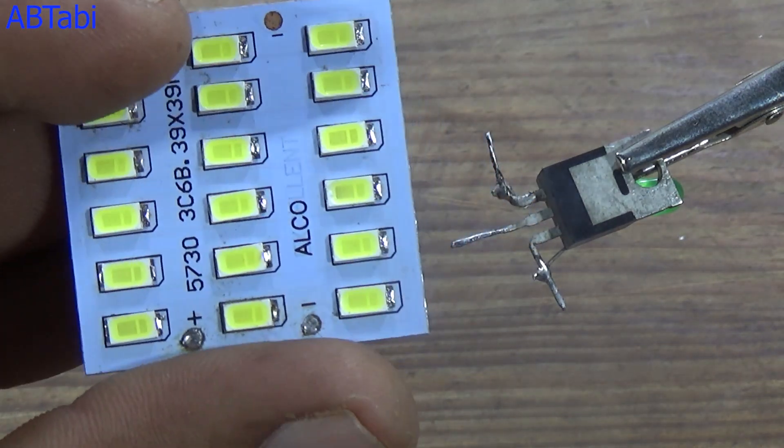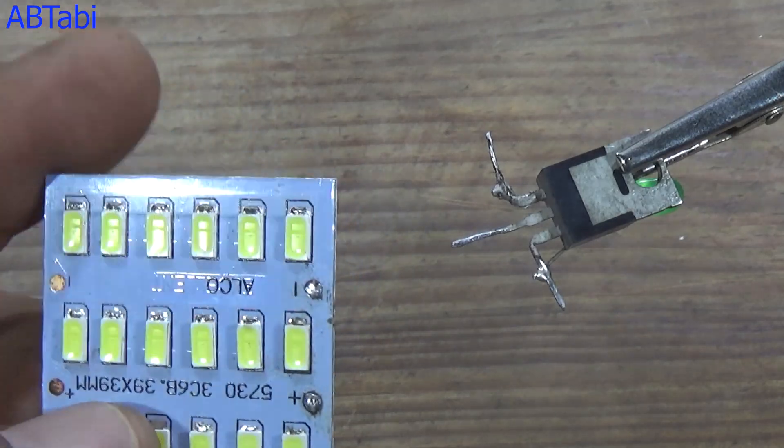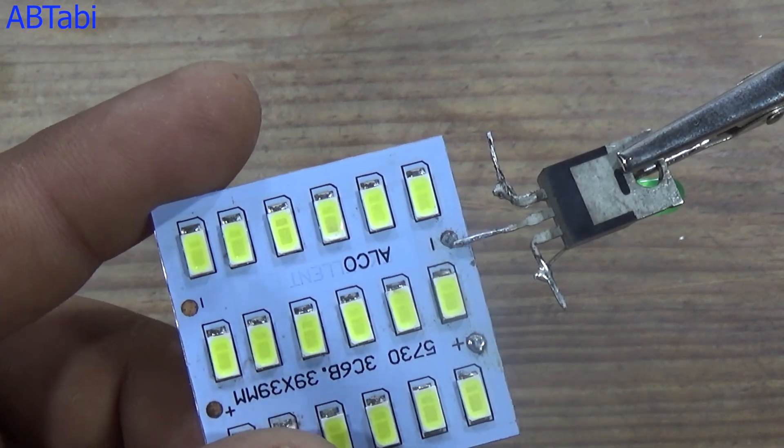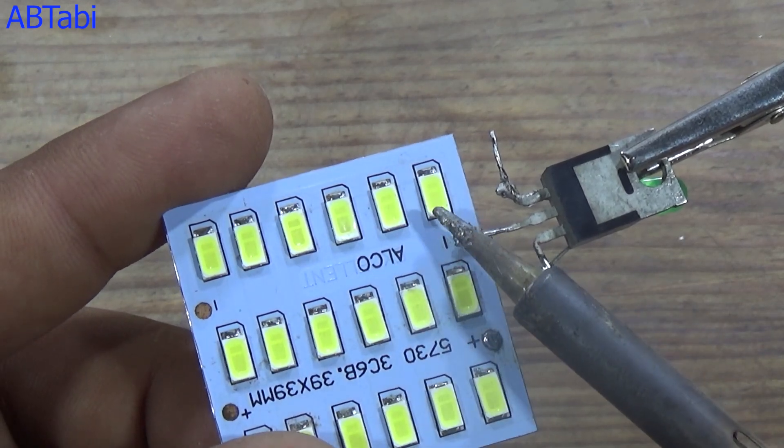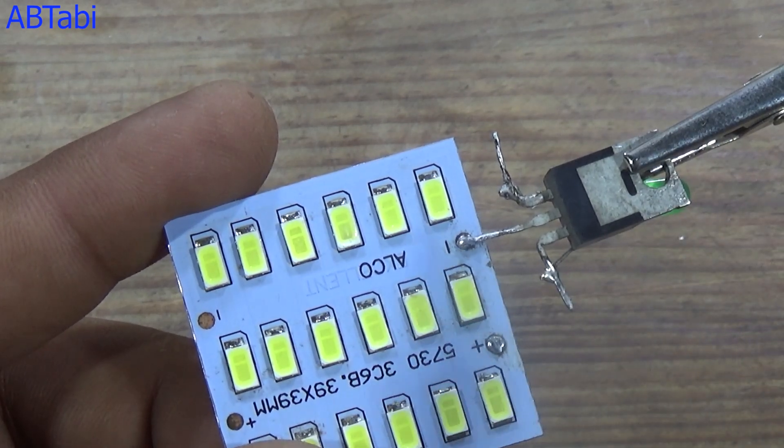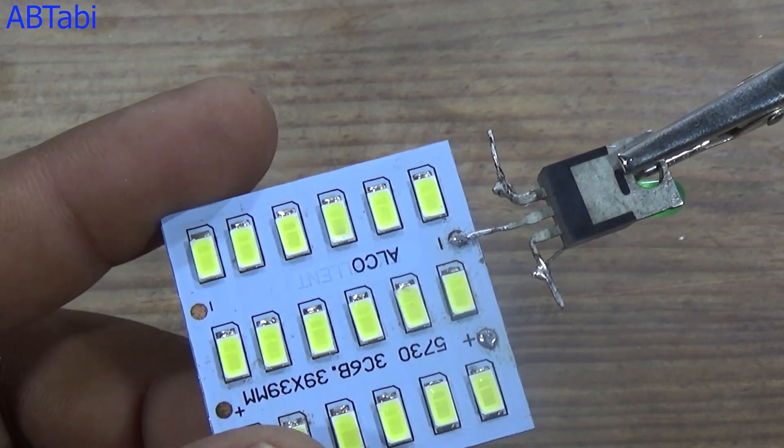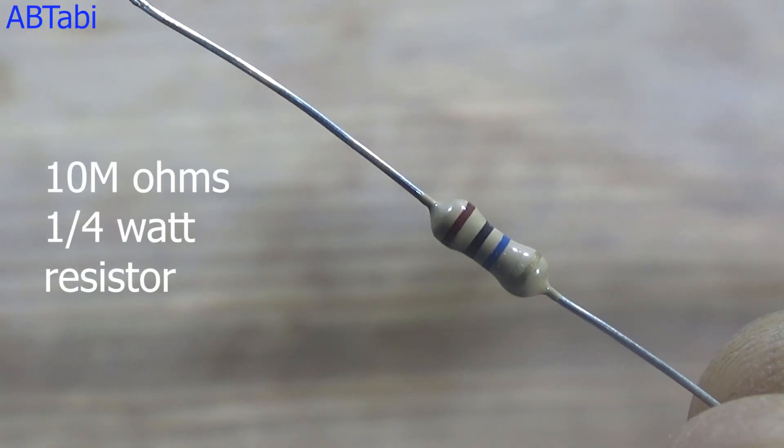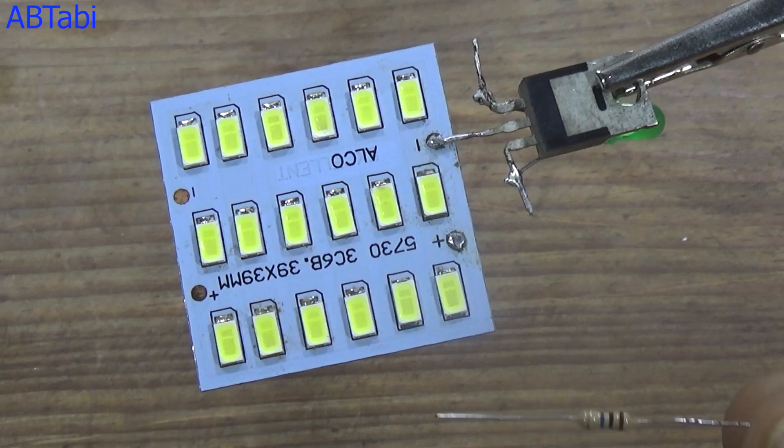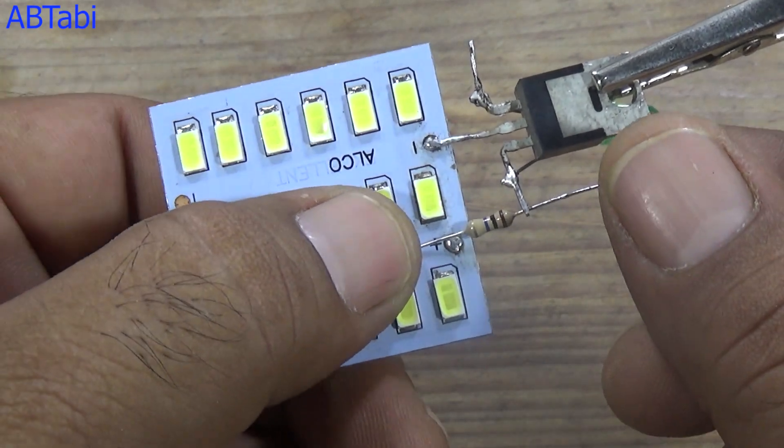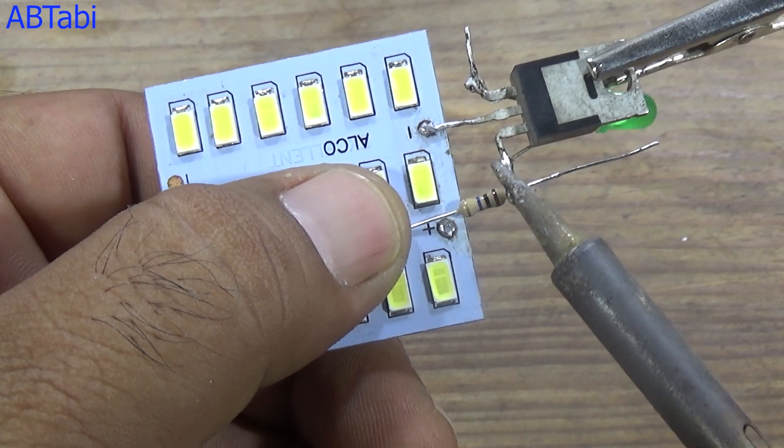LED light or strip negative side connects with MOSFET drain pin. Take a 10 megohm quarter watt resistor. The resistor connects with LED positive supply to MOSFET gate pin.